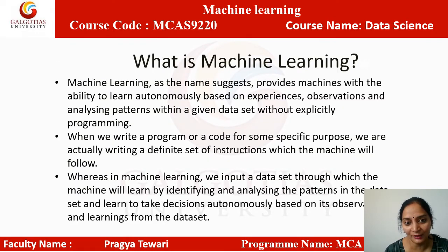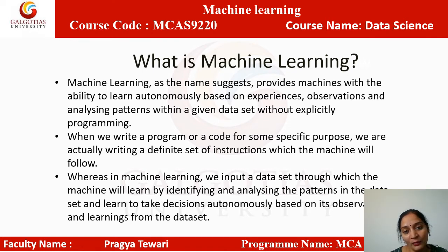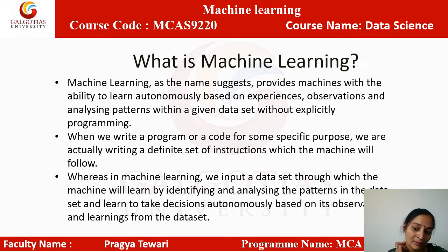So what is machine learning? Machine learning, as the name suggests, provides machines with the ability to learn autonomously based on experience, observation, and analyzing patterns within a given dataset without being explicitly programmed. When we write a program for a specific purpose, we write a definite set of instructions for the machine to follow. In machine learning, we input data through which the machine learns by identifying and analyzing patterns, and learns to take decisions autonomously based on observation.